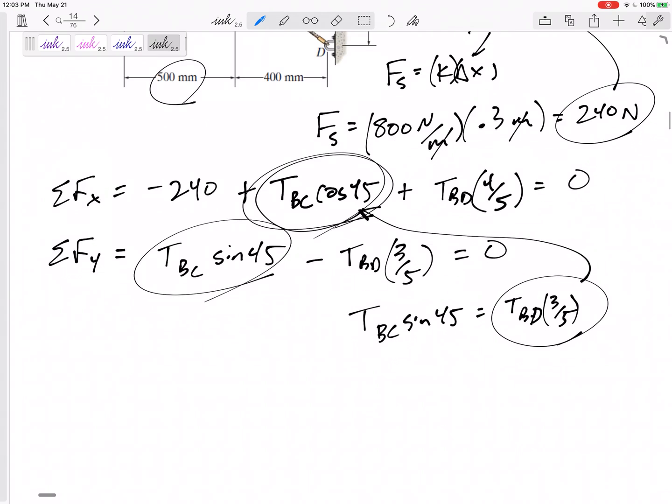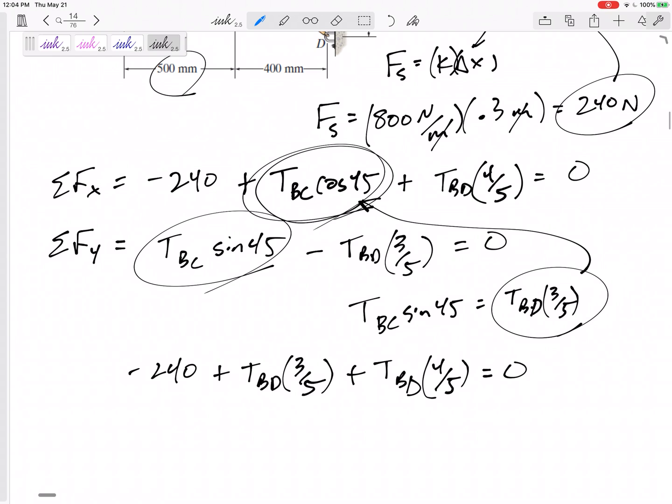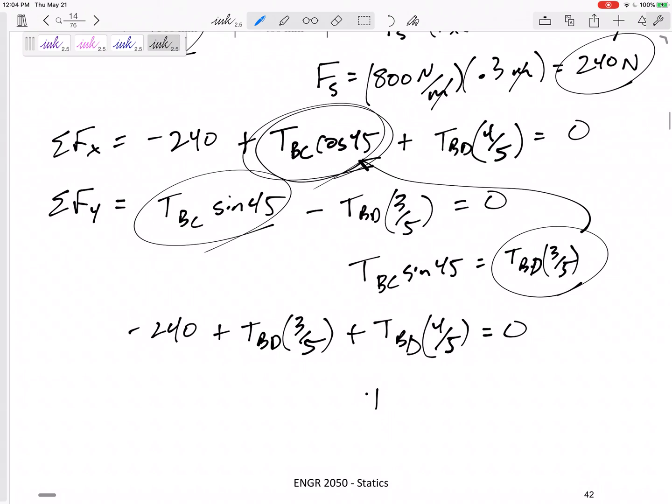So I'd have negative 240 plus TBD three-fifths plus TBD four-fifths. All right, so seven-fifths. Take that 240 to the other side, divide through. All right, divide through, I would get TBD is 171 newtons. Box that in.